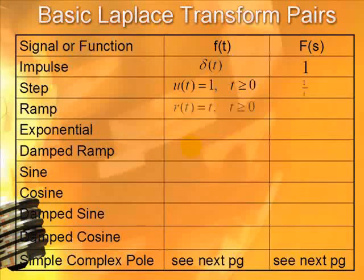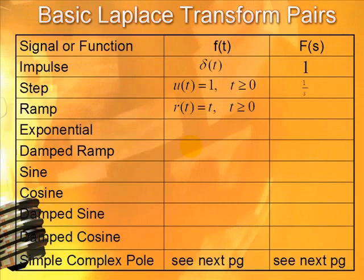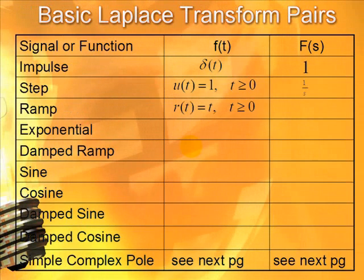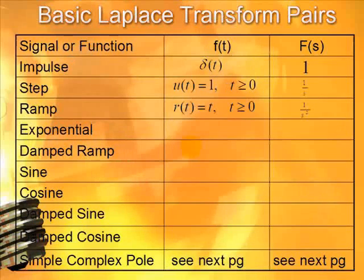Now, the ramp can be generated from the step function as we know that when you integrate a step, you get a ramp. But we know that the symbol for integral is one over s, and the Laplace transform for a step is one over s also. So, that leaves that the Laplace transform of a ramp is one over s squared.